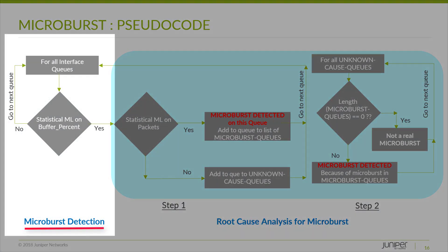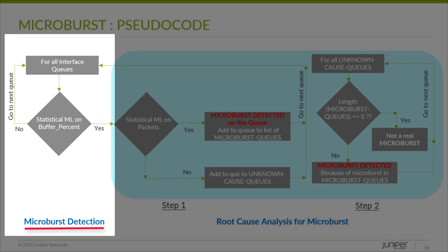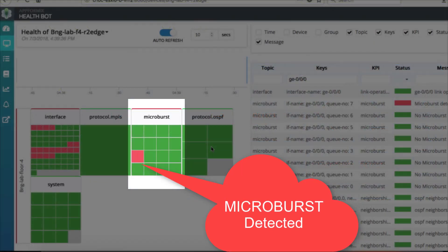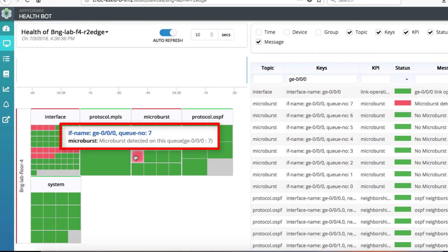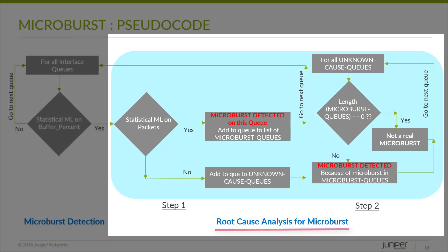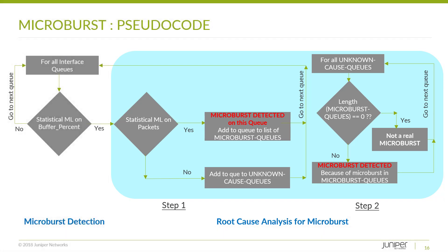While detection is the easy part, the hard problem is to root cause the reason for the microburst — that is, to pinpoint the increased traffic in which interface or queue actually resulted in the microburst. This requires the capability of performing a complex decision tree evaluation, which is something that HealthBot supports. The root cause analysis is done by comparing the bandwidth utilization across the queues and figuring out whether the microburst on the queue in question happened due to extra traffic on the same queue, due to a microburst on another queue, or due to extra traffic on a high priority queue.